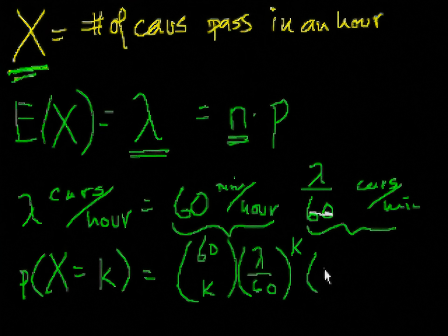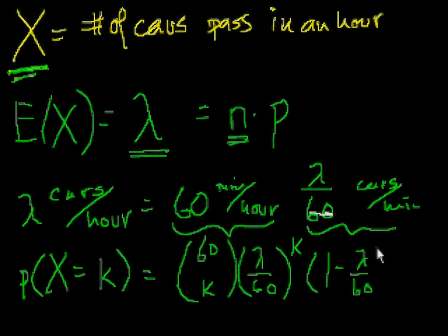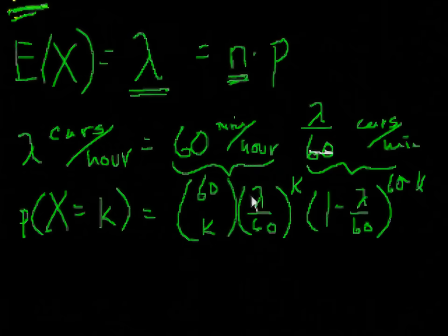Times the probability of no success, or that no cars pass, to the n minus k, right? If we have k successes, we have to have 60 minus k failures. There are 60 minus k minutes where no car passed. And you know, this actually wouldn't be that bad of an approximation, where you have 60 intervals and you say this is a binomial distribution, and you'd probably get reasonable results.